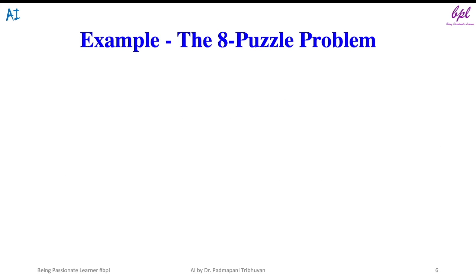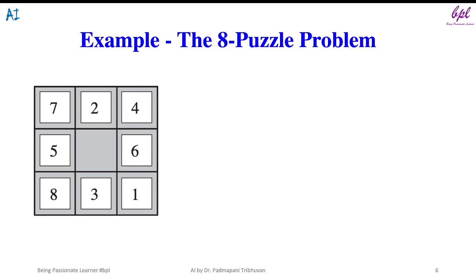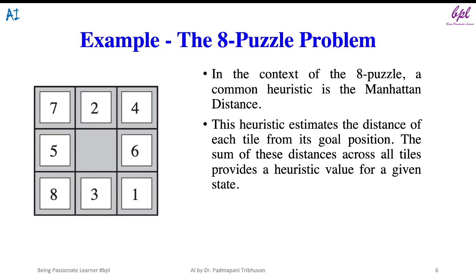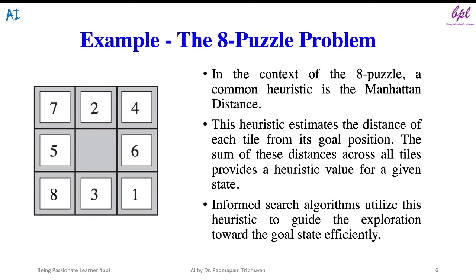To illustrate the application of heuristic functions, let us consider the classic eight puzzle problem. In this puzzle we have a three-by-three grid with eight numbered tiles and one empty space. The goal is to rearrange the tiles to reach a specified goal state. A common heuristic for the eight puzzle is Manhattan distance, which estimates the distance of each tile from its goal position. The sum of these distances across all tiles provides a heuristic value for a given state, and informed search algorithms use this to guide exploration towards the goal state efficiently.